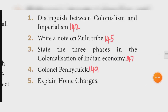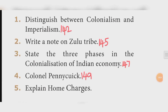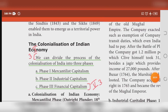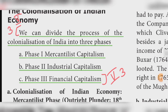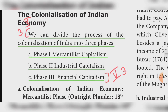Question three: State the three phases in the colonization of the Indian economy. Answer on book page 147. We can divide the process into three phases: Phase 1 — Mercantilist capitalism; Phase 2 — Industrial capitalism; Phase 3 — Financial capitalism.